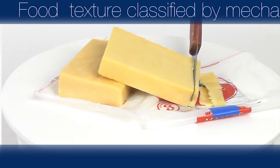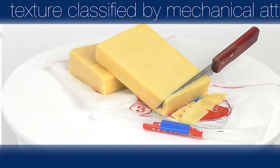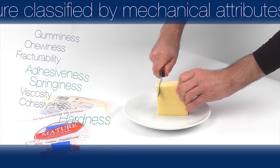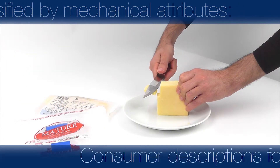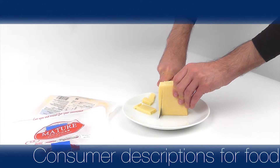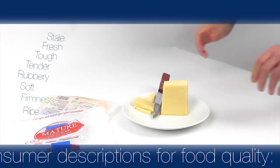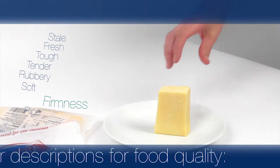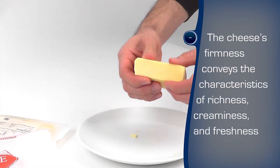Food texture can be scientifically classified by a number of mechanical attributes: hardness, cohesiveness, viscosity, springiness, adhesiveness, fracturability, chewiness and gumminess. A consumer may describe the sensory quality of food with different terms, evaluating the texture through touch, mouthfeel and in other ways as they interact with the product.